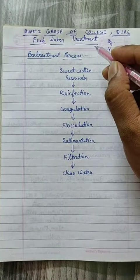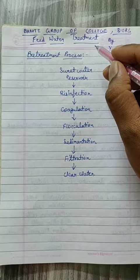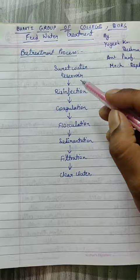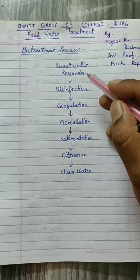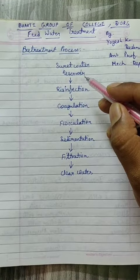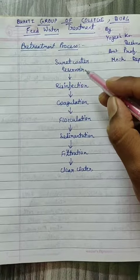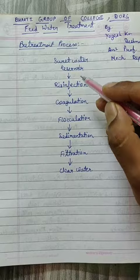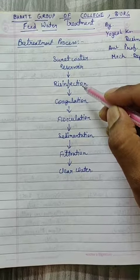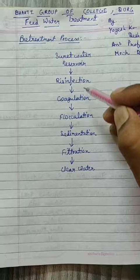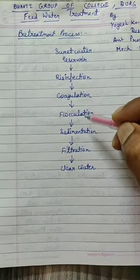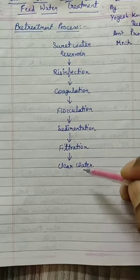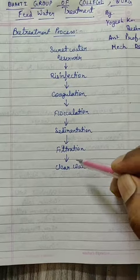How is the water fed into the boiler treated? We have a pre-treatment process. Sweet water from the reservoir comes to the plant and is kept in a reservoir. The water then gets mixed with disinfectants, goes through coagulation, flocculation, sedimentation, and filtration processes. Then we get clear water.